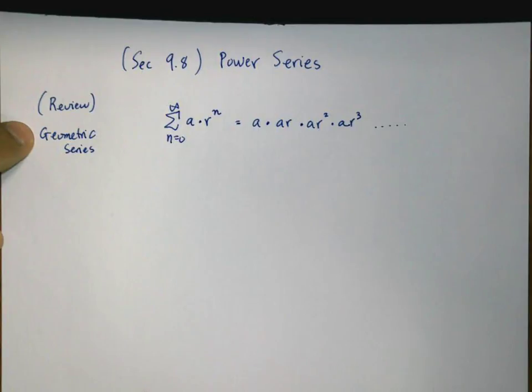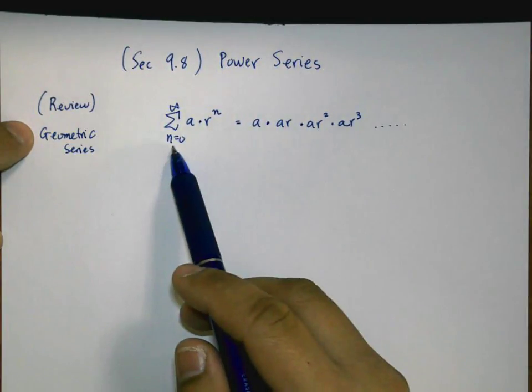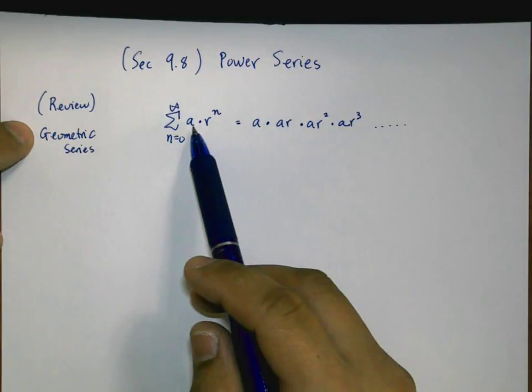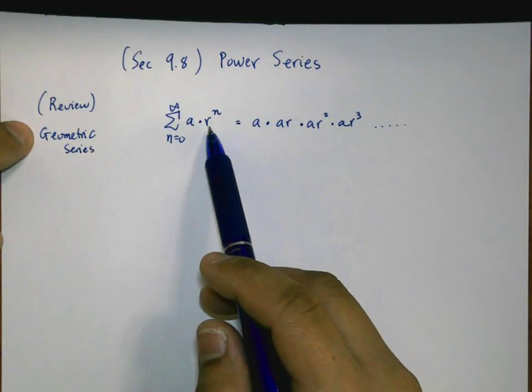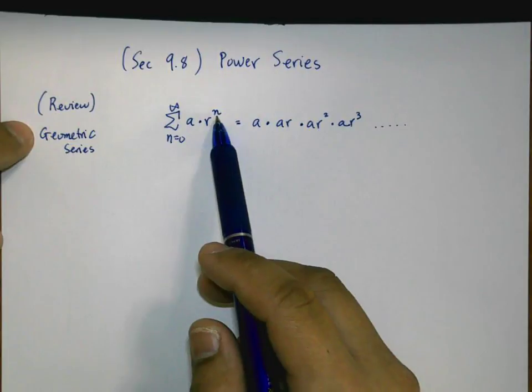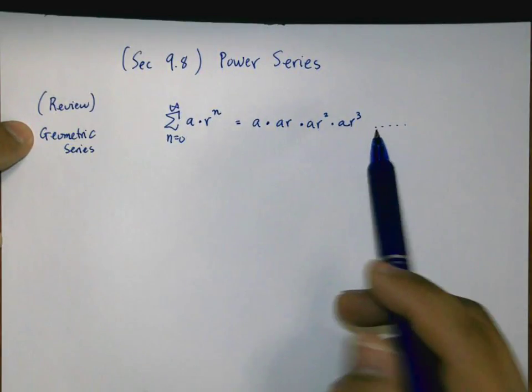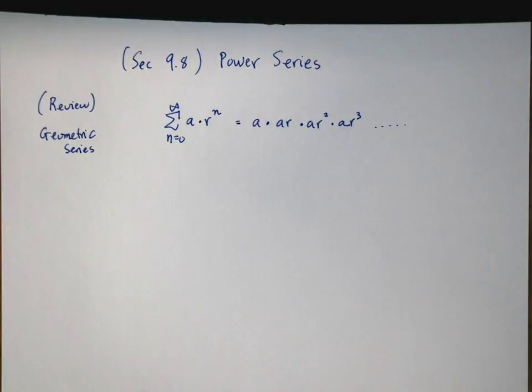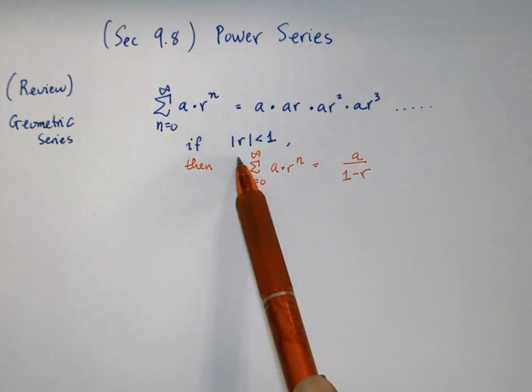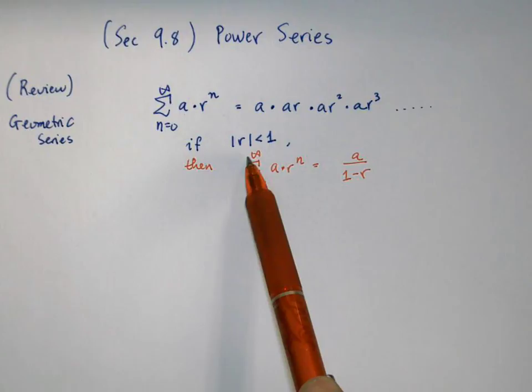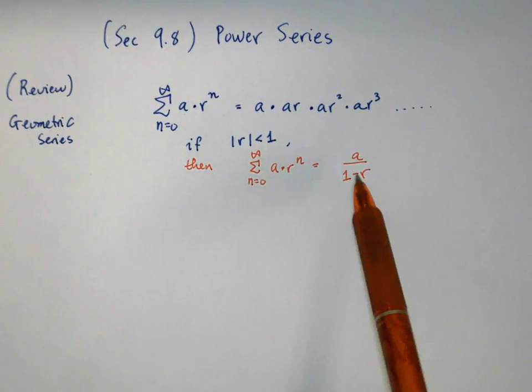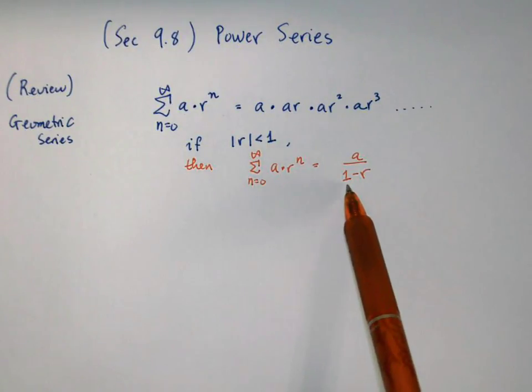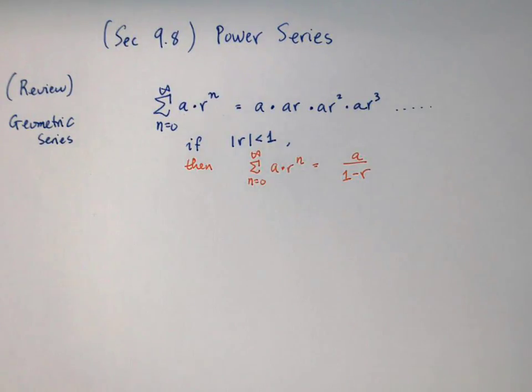We talked about geometric series before, and it is a series from n equals zero to infinity of a sum. a is the first term times some common ratio to the nth power, and when you expand it you get this. For some special cases, such as if the common ratio is strictly less than one in absolute value, then the infinite series is exactly equal to this term, a over one minus r. We talked about this before and proved it many times.